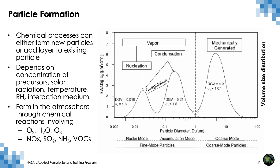If you look at the chart here, you will see there are three distinct peaks of volume size distribution. The first corresponds to the nucleation mode, representing ultrafine particles typically produced through nucleation from gases. Then there is the accumulation mode — submicron particles less than one micron — typically produced through coagulation or condensation of vapor on existing particles. The third is the coarse mode, which is larger than one micron, and is typically generated through mechanical processes on the ground such as windblown dust, sea salt, or ocean spray.